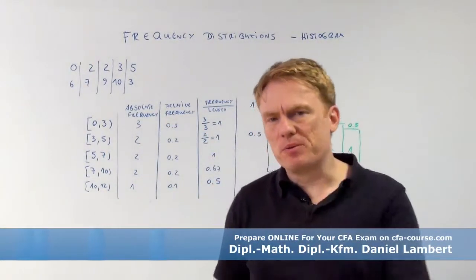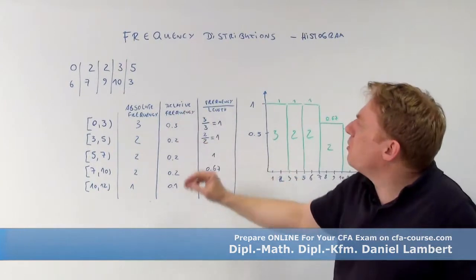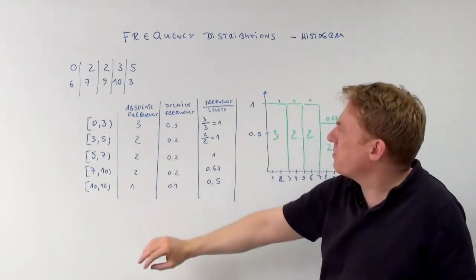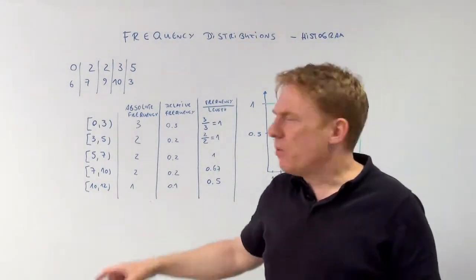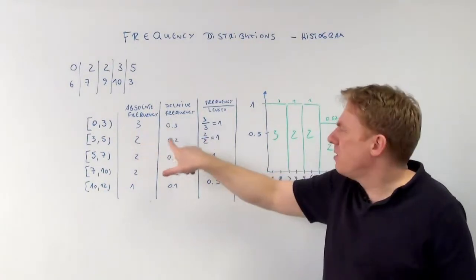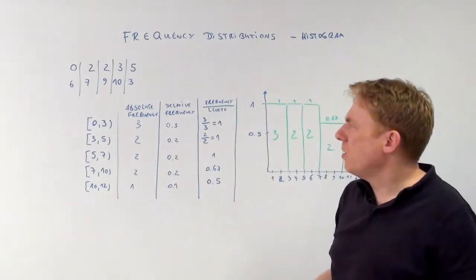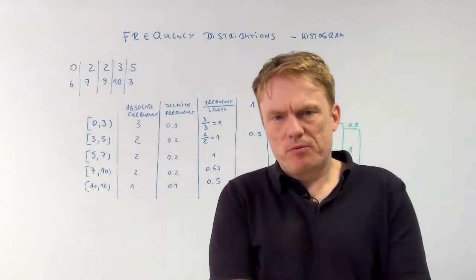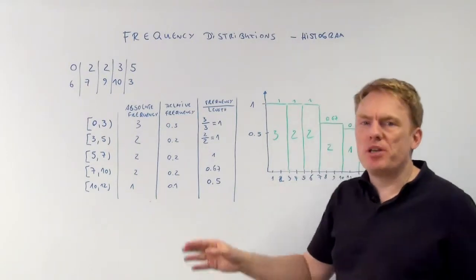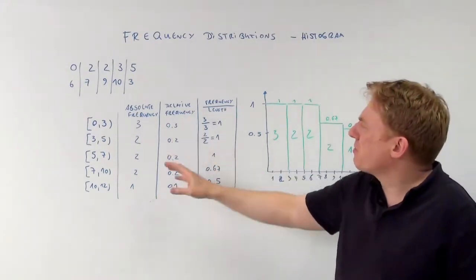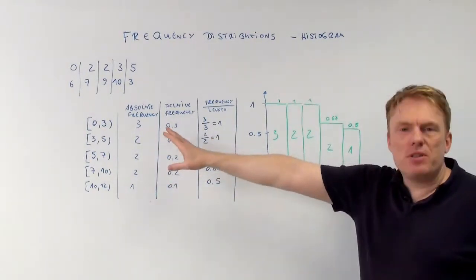Then there is the relative frequency. The relative frequency is computed by the absolute frequency divided by the number of values all in all, which means 10 values. If you divide by 10, 0.3, 2 divided by 10 is 0.2, and so on. Which means changing the absolute frequencies to relative frequencies is not difficult at all. You just need to divide by the number of numbers that are there. Absolute frequency, relative frequency.